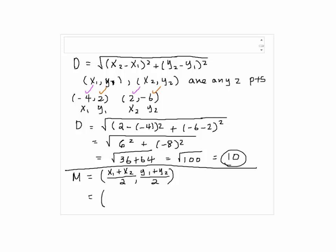So here we have x1 which is negative 4, plus x2 which is 2, over 2, comma, y1 which is 2, plus y2 which is negative 6, over 2. So by simplifying we get negative 2 over 2, which will